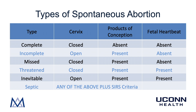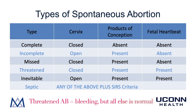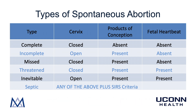With a threatened abortion, the cervix is closed, the products of conception are present within the uterus, and the fetal heartbeat is also present. This is a very common presentation to the emergency room. We can reassure patients that 80% of threatened abortion cases go on to be a normal pregnancy when identified after eight weeks. Inevitable abortion is a rare finding but does show up on shelf exams. With an inevitable abortion, the cervix is open, the products of conception are present within the uterus, and there is a fetal heartbeat present, but we know that due to cervical dilation, inevitably the pregnancy will be lost.